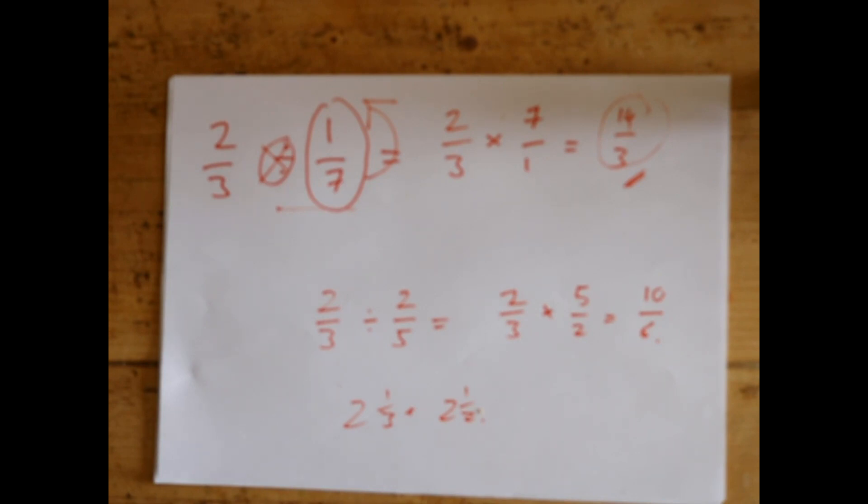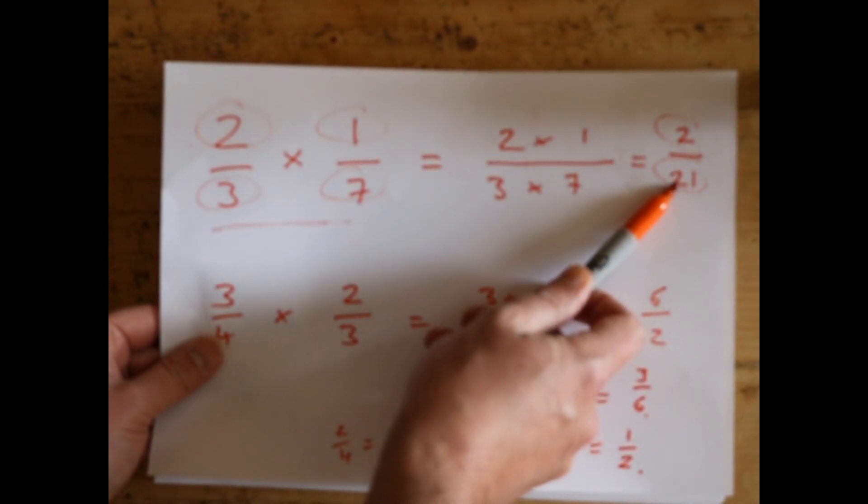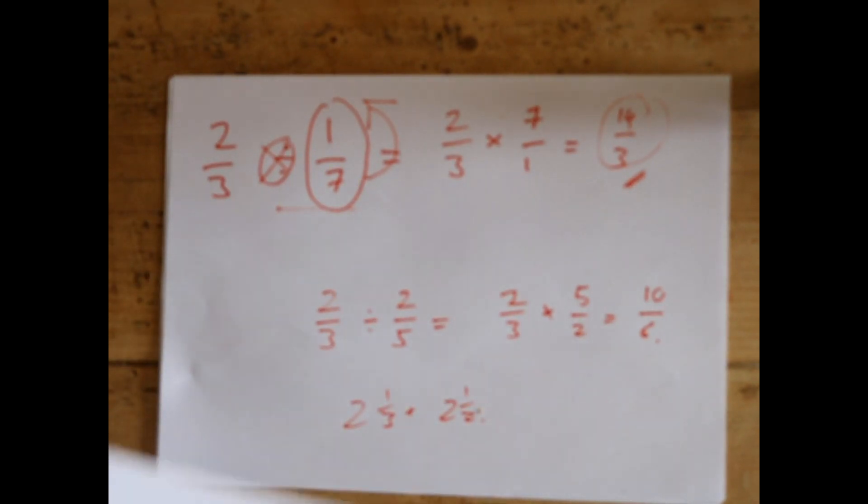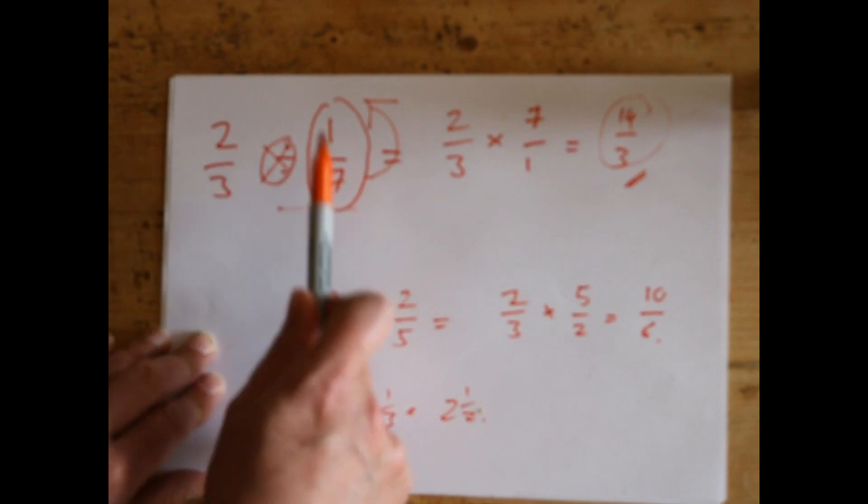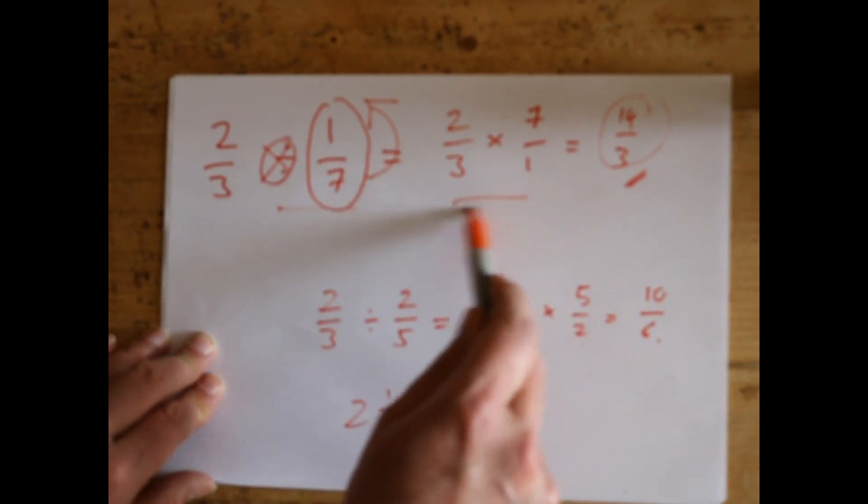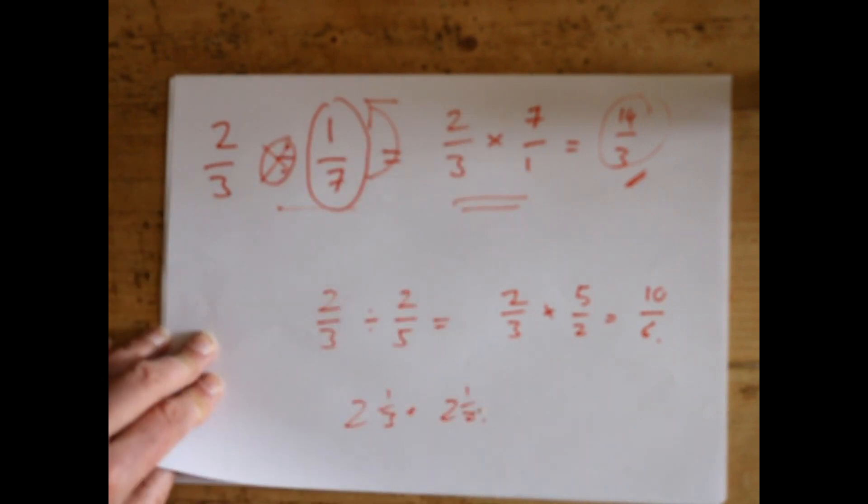We'll keep the method nice and straightforward. So a quick recap: for times, just times the top and times the bottom, then simplify. For dividing, swap the divide for times and then turn this fraction upside down, and then you're back to times again. Don't be confused - that looks weird, but that's just the way to do it. So times and divide in fractions - enjoy!